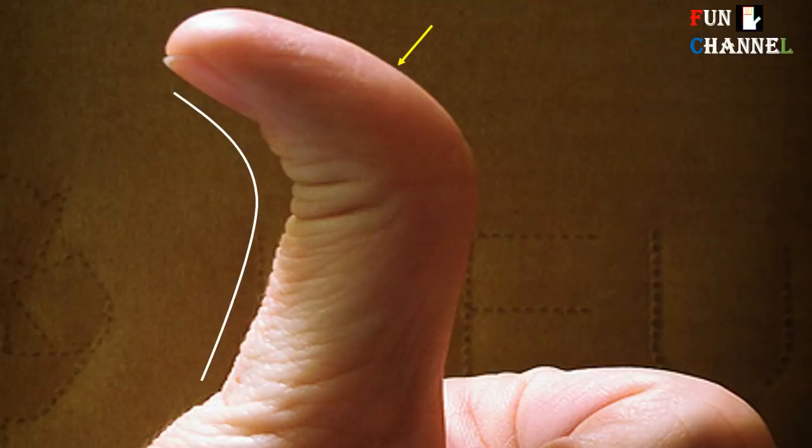People with super flexible thumb are very emotional. One day they will feel very happy, another day they will feel completely dejected. In a nutshell, they are moody and impulsive in nature. I hope you guys found this information useful and interesting.